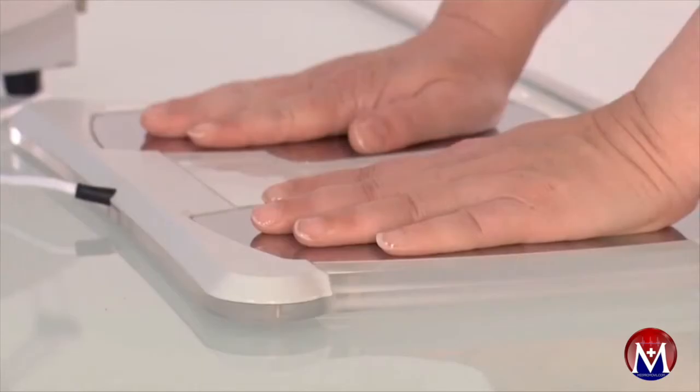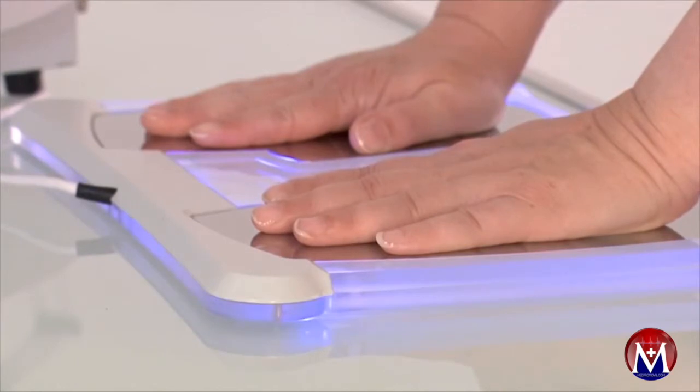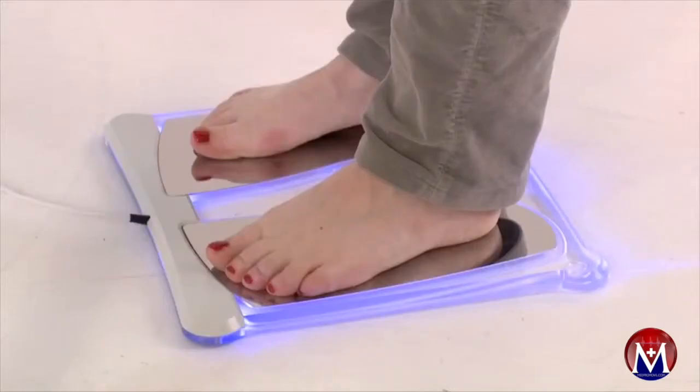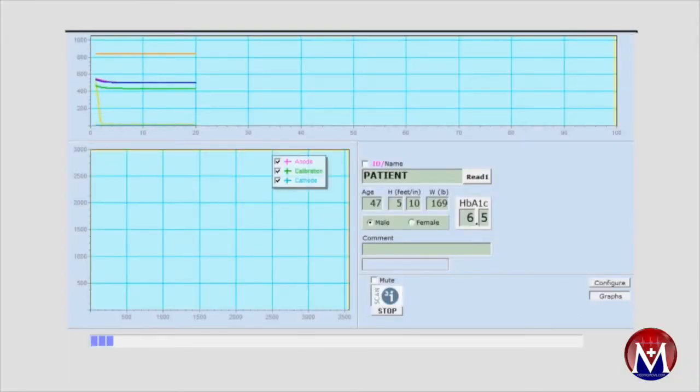As the test starts, the sensor plates autocalibrate and a small direct current of less than 4 volts is applied to both the hand and foot sensor plates. The chloride ions from the sweat glands are attracted to the stainless steel plates.